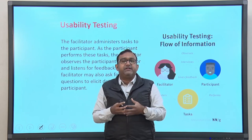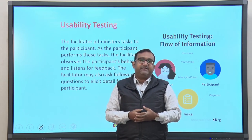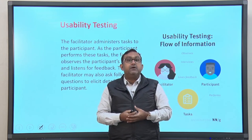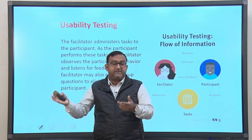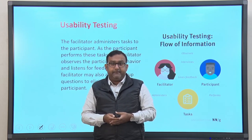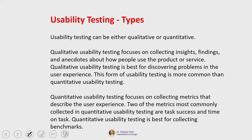Given this structure, the question is what kind of data is gathered and how can it be analyzed — to be discussed in module 12 in detail. The study can be of two major types: qualitative usability testing and quantitative usability testing. Qualitative usability testing focuses on collecting insights, findings, and anecdotes about how people use the product or service, and is best for discovering problems in the user experience.